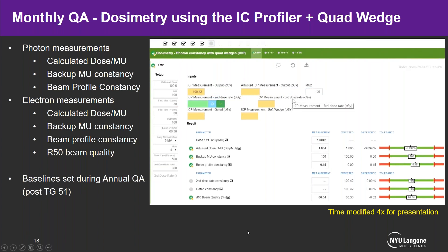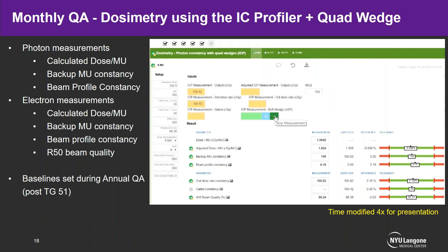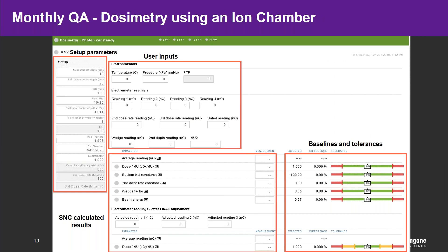For electrons it's even simpler — in that first measurement you're doing your output, beam profile constancy, and R50 beam quality all at once. The baselines can easily be set during your annual QA after TG-51 or after machine service when resetting is warranted. For a monthly QA you can also do it traditionally using an ion chamber in water or solid water. The execution screen shows your measurement depths, SSD, field size, chamber calibration factor, TG-51 factors including P-pol, P-ion, and KQ, as well as an electrometer factor and temperature-pressure corrections.